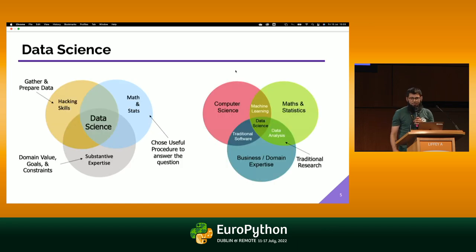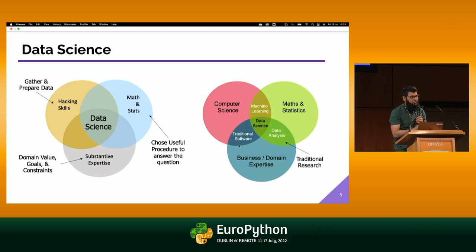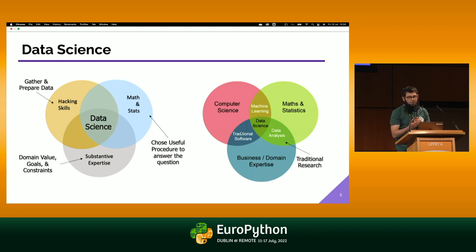When we talk about data science or perhaps artificial intelligence, we see a lot of intersections. If we merge computer science with business, we have traditional software such as Excel and PowerPoint. When we mix computer science with maths and statistics, this is where we usually see machine learning. When we mix maths and stats with business or any domain — which could be arts, humanities, and social sciences — we get data analysis where most traditional research takes place. When we combine all three together, we get data science: computer science as a tool, maths and stats providing theory, and the business or domain providing the context. In this intersection, there is great support coming from Python.